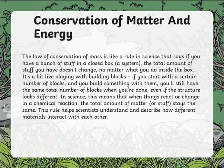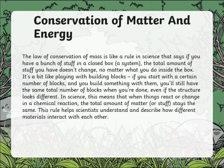The law of conservation of mass is like a rule in science that says if you have a bunch of stuff in a closed box — technically a system — the total amount of stuff you have doesn't change no matter what you do inside the box. It's like playing with building blocks: if you start with a certain number of blocks and build something, you still have the same total number when you're done, even if the structure looks different. In science, this means that when things react or change in a chemical reaction, the total amount of matter stays the same.